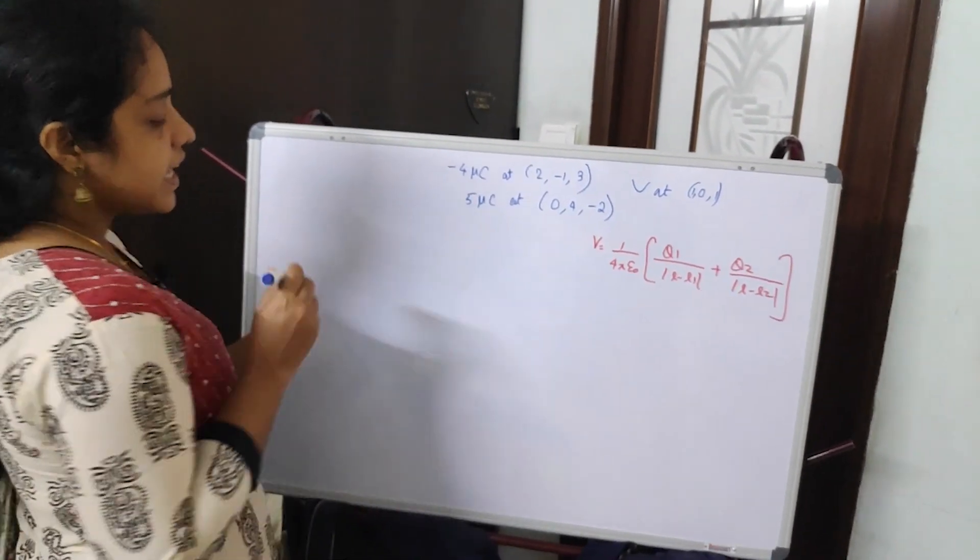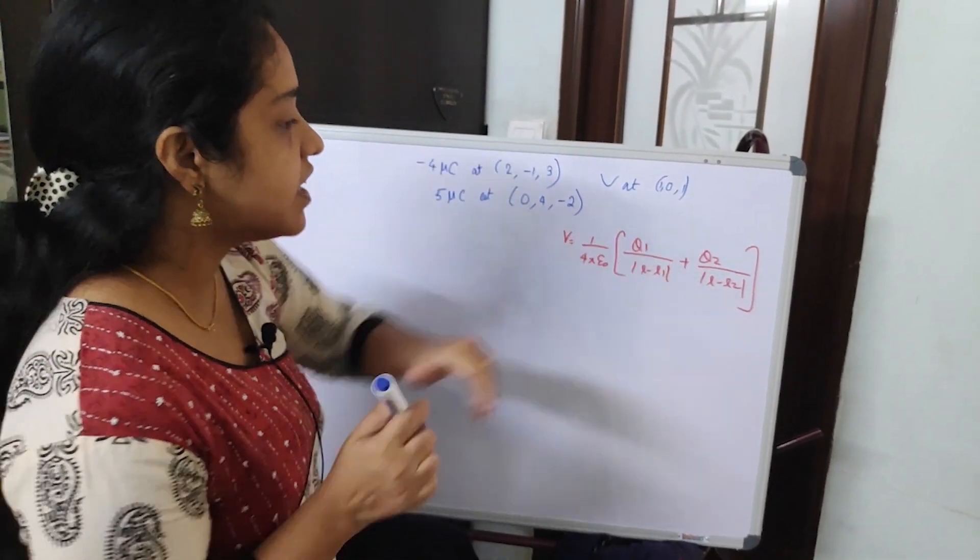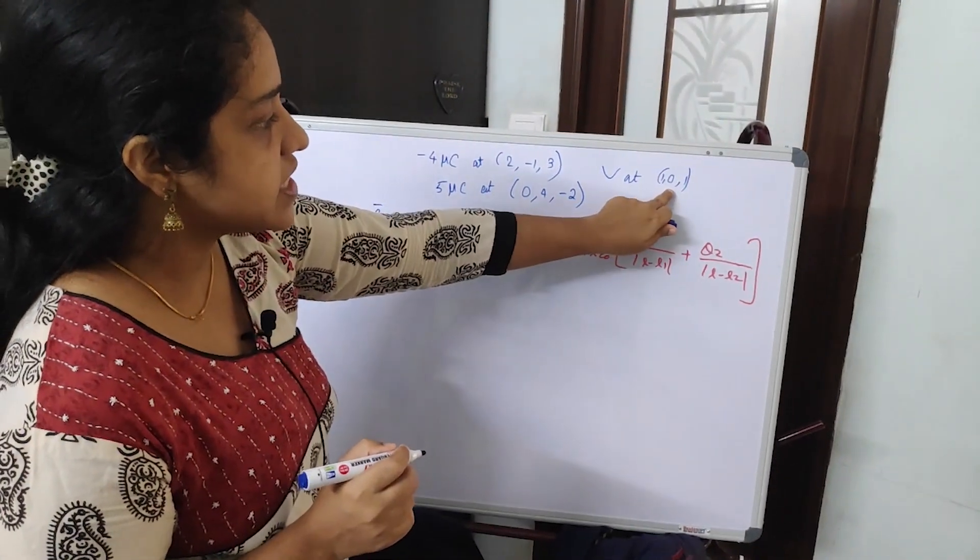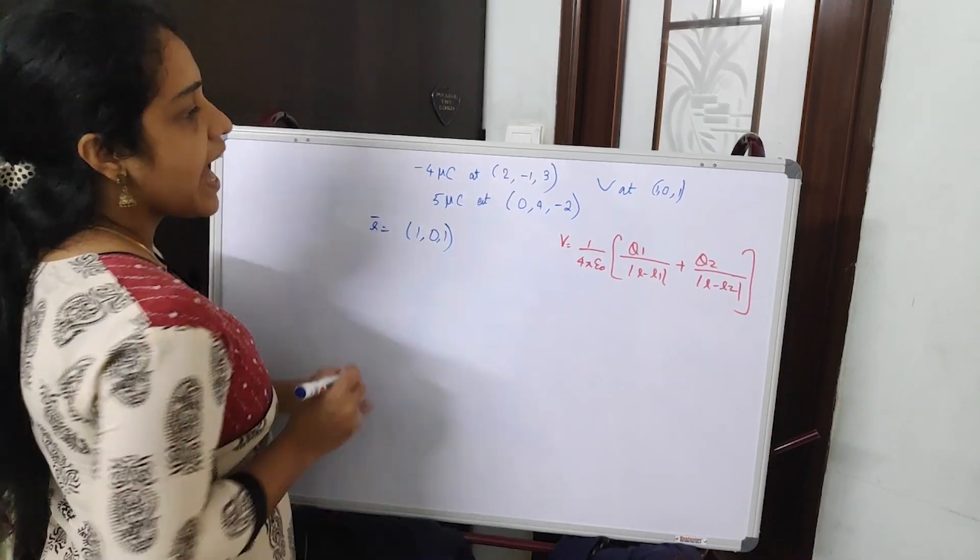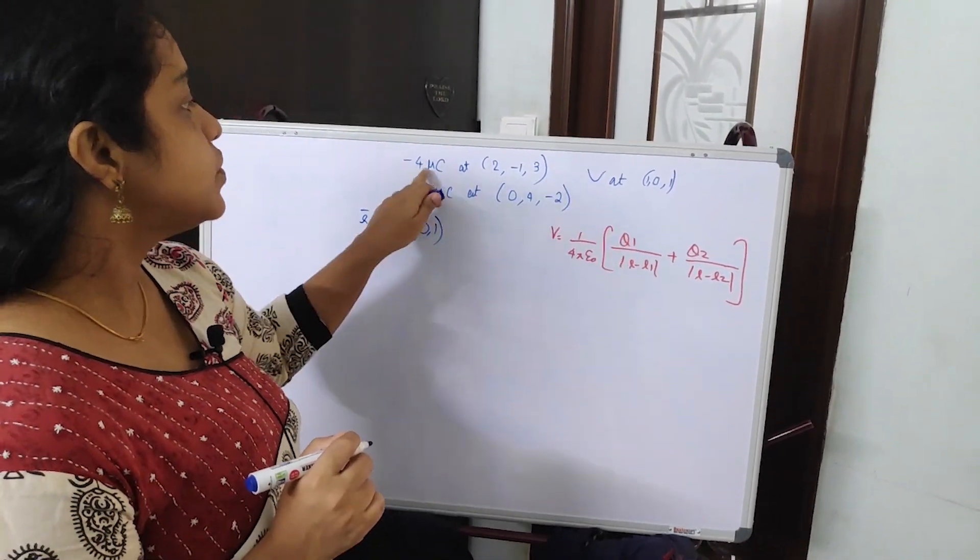Here in this problem, they have asked to calculate potential at this point. So here vector r will be, that is the main location is 1,0,1. So this is the position vector and you are asked to find the potential at this point and you have two charges.